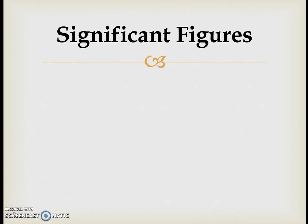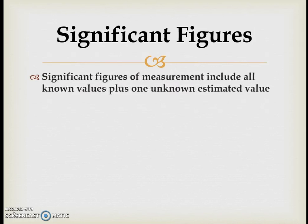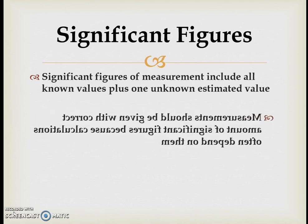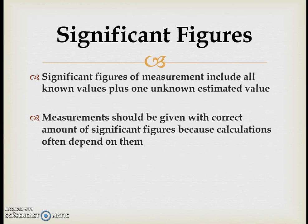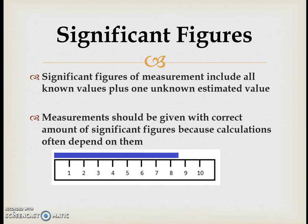These measurements have what we call significant figures — numbers that were actually measured, giving other people an idea of how specific and precise a measurement was. It includes all values known by the instrument used to take the measurement, plus one more estimated value. For example, looking at a blue line that is eight units long but not quite nine, you'd estimate it to roughly 8.6 units.